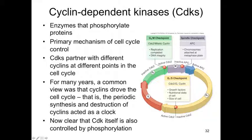For many years, a common view was that cyclins alone drove the cell cycle — that the periodic synthesis and destruction of cyclins acted like a clock. Because what we see in each of these phases is an increase in cyclin, then a decrease in cyclin, then an increase, then a decrease. It's now clear that it's CDK in conjunction with cyclins that allows this to happen.